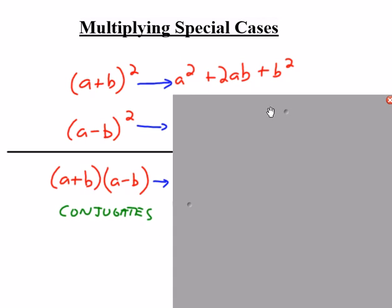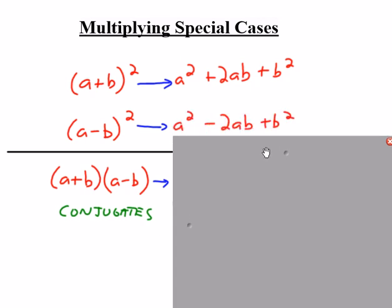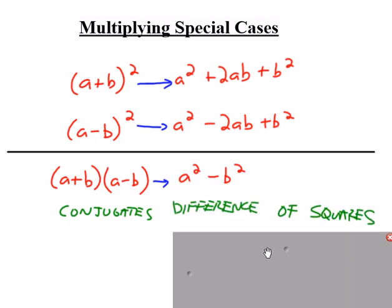If you had something minus something else in the binomial, it'd be the same thing, but just with a minus in the middle. And then finally, something you should know if you're multiplying conjugates, the result is a difference of squares.